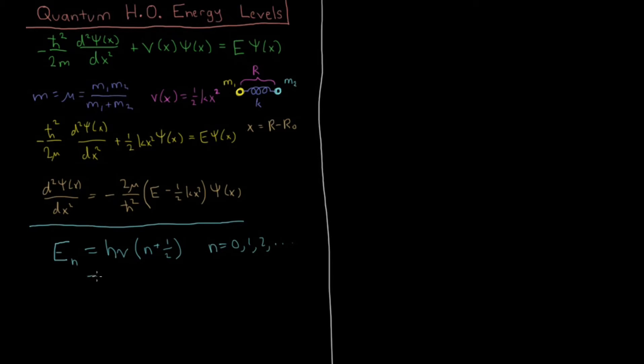And this would be equivalent to writing h-bar omega n plus one-half. h-bar is just h over 2π nu, and omega is just 2π times nu, so h-bar omega and h nu are the same thing.